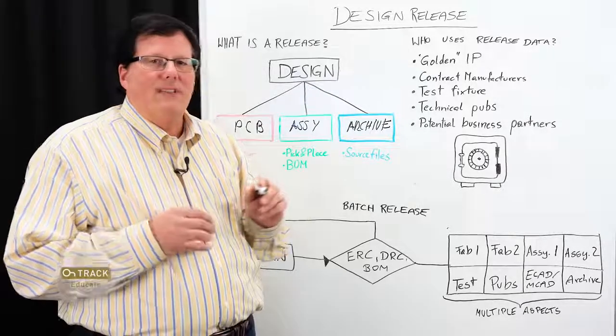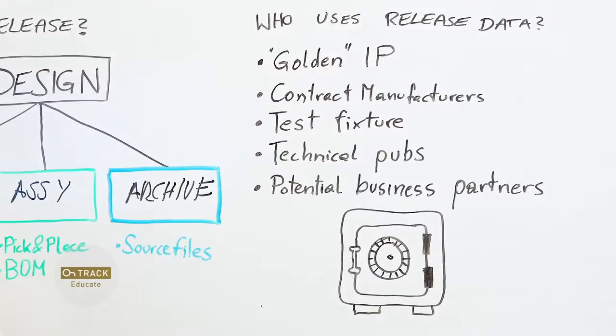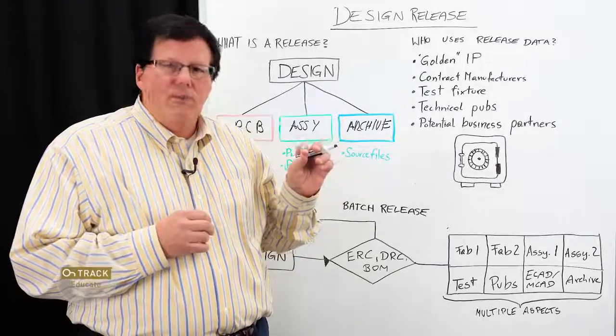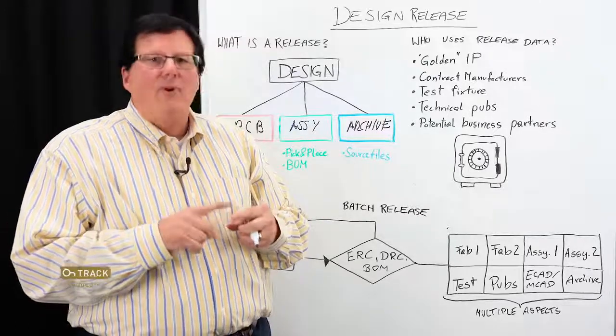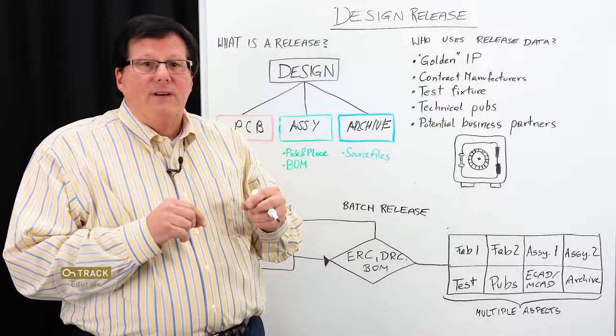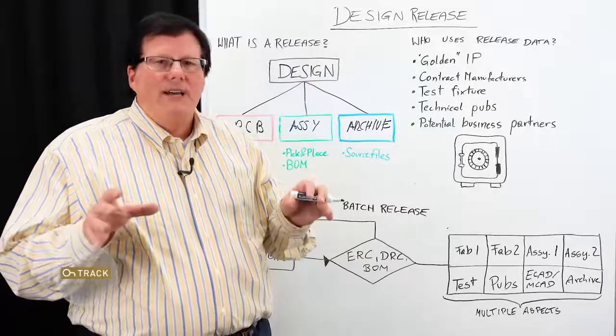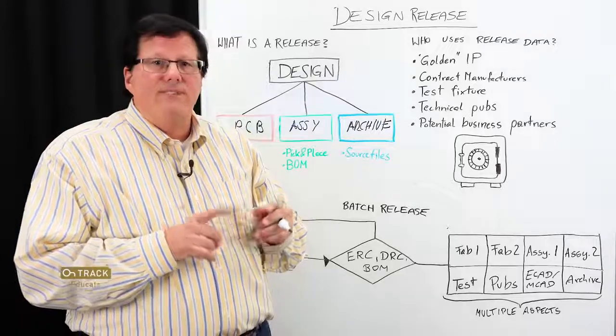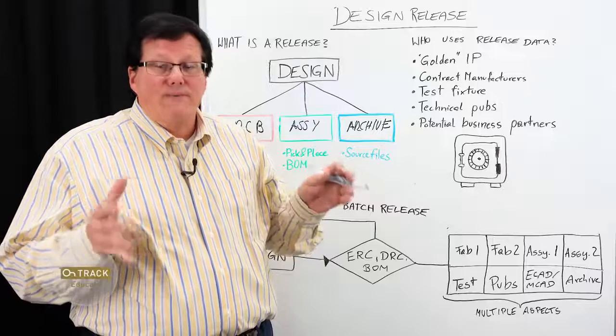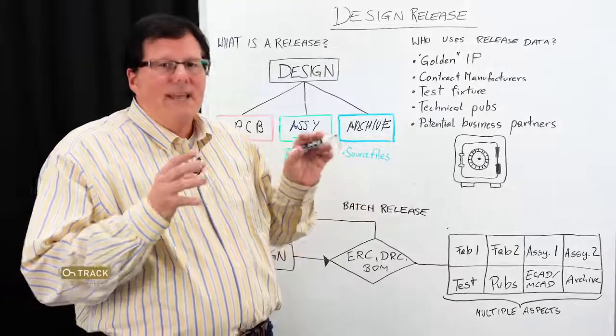So who really uses release data? Who are the collaborators involved? First and foremost, release data is the golden IP of an enterprise that creates designs. Back in the earlier days of my career, when we would release a package, we literally released it in its physical form with paper, with film. We would even include ROM chips that had device software in it. All of that would be packaged into an envelope and submitted to essentially a room that was fortified, not unlike a bank vault. It was impervious to natural disasters, impervious to fire. That's where we stored the fruits of all of the labor and effort of the design team. That's the way we did it back then. You literally released it as golden IP.